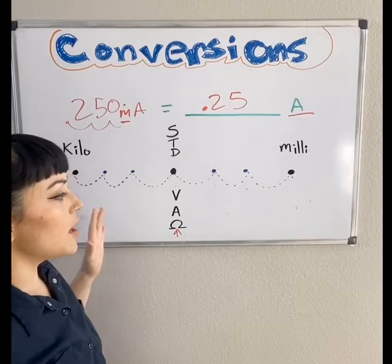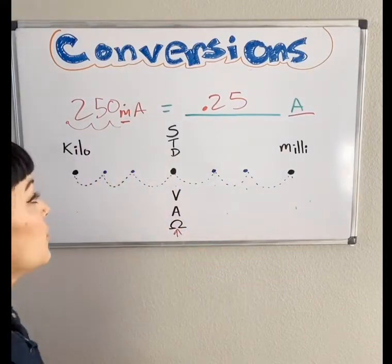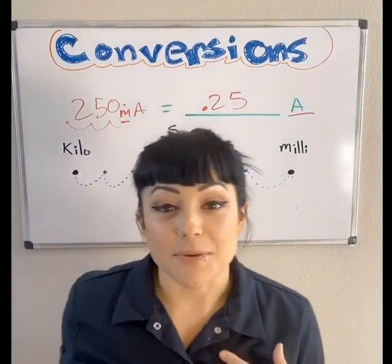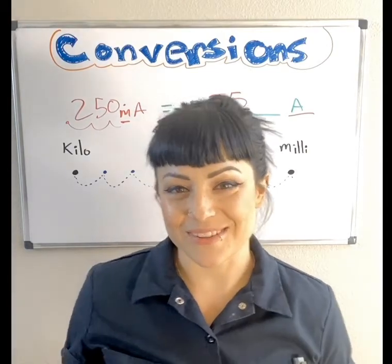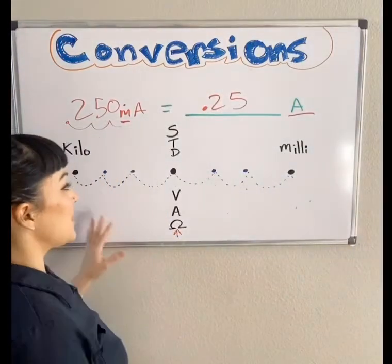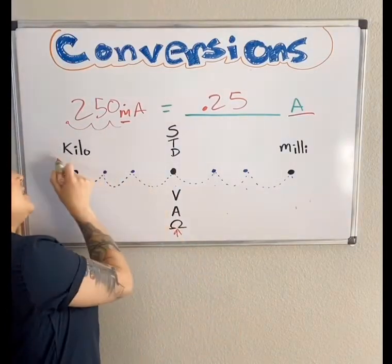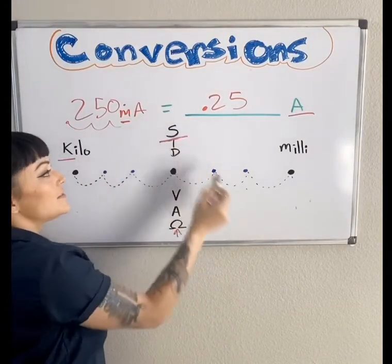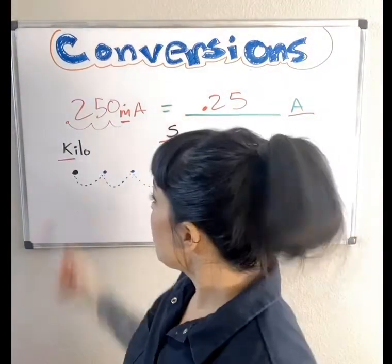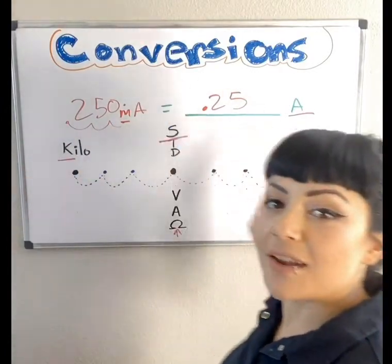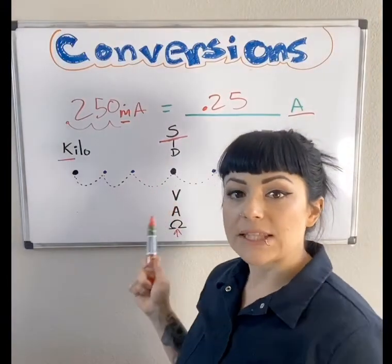What you can often forget is what order the prefixes go in — what side is what. I always remember 'Kelly stayed mad.' If I remember that, I know which side the K goes on and which side the little M goes on. That's how you utilize this STD chart.